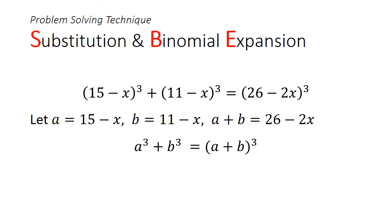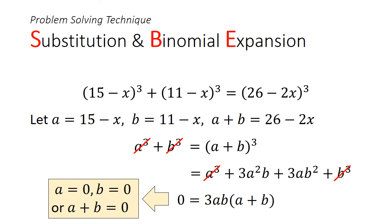We sub them in, we get a cubed plus b cubed equals (a+b) cubed. Using binomial theorem, we can expand the right hand side and cancel out the a cubed and b cubed on both sides, then factorize out 3ab to see that either a equals 0, b equals 0, or (a+b) equals 0.